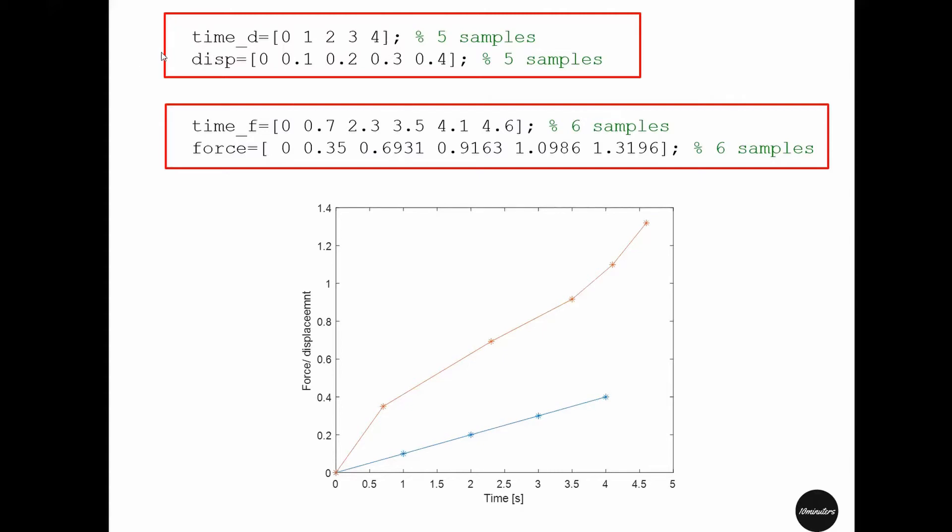For example, from a tensile test the displacement was recorded at time 0, 1, 2, 3, and 4 seconds, and that means we have 5 samples. These are the values of the displacement taken at those time stamps.